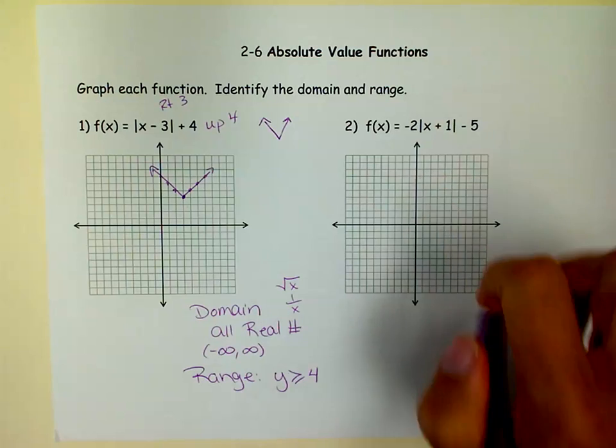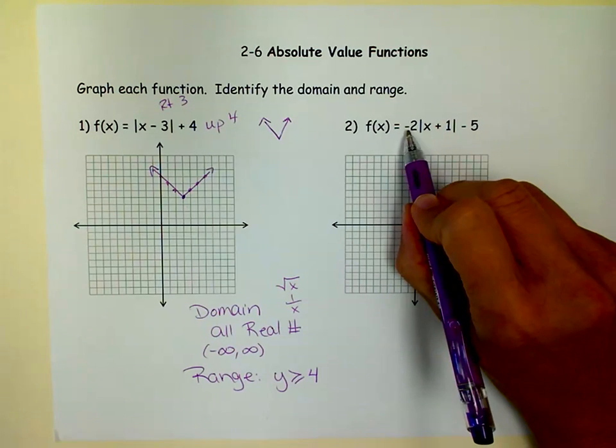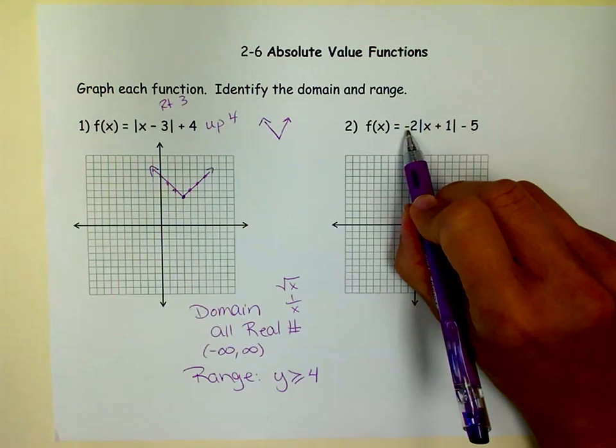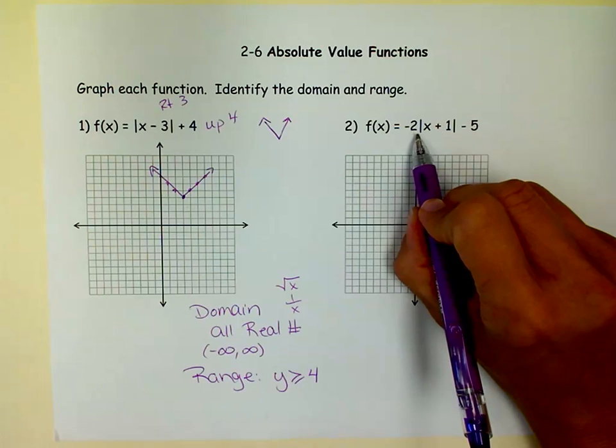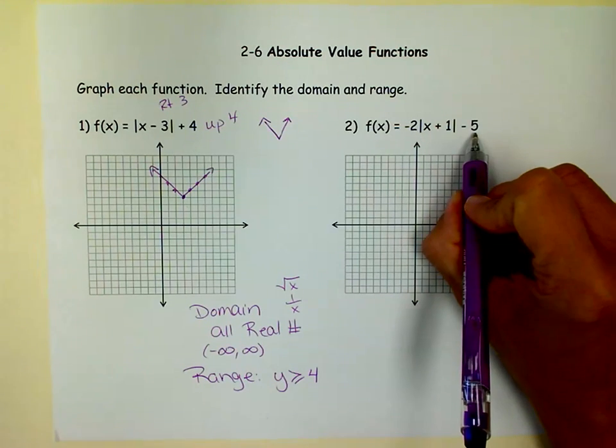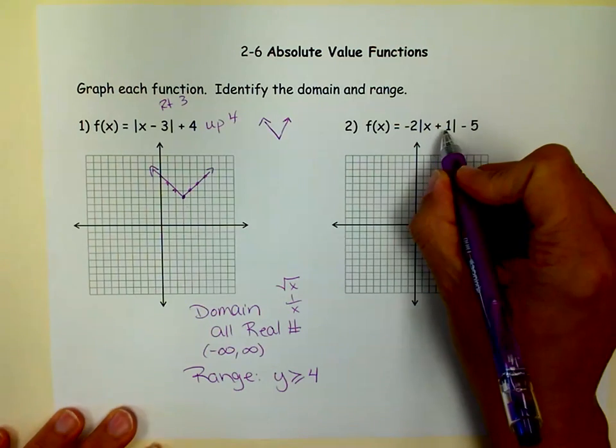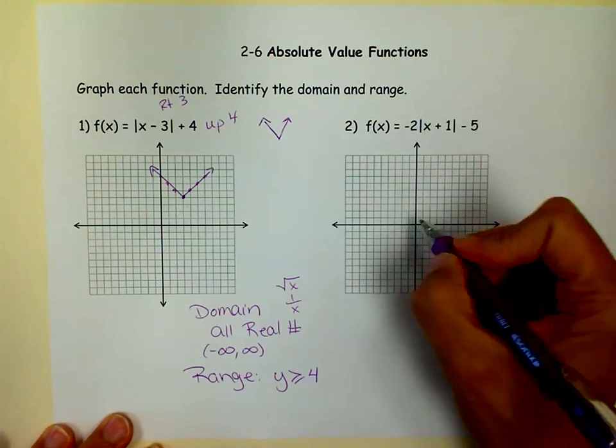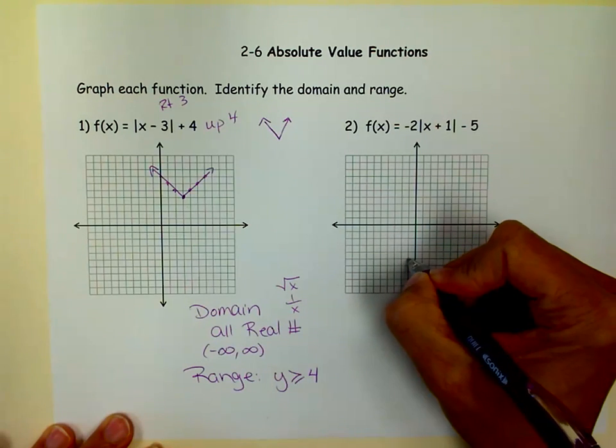Okay, let's look at this one. This negative sign tells me I'm flipped over the x-axis. This 2 tells me I'm vertically stretched. This 1 tells me I'm moved left 1. And this tells me I'm moved down 5. So, keeping all that in mind, my vertex is now at negative 1, negative 5. So, negative 1, 1, 2, 3, 4, 5.